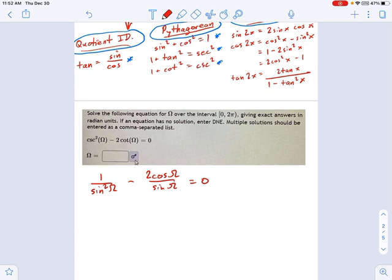That says a bunch of fractions, and maybe let's get rid of the sine squareds on the bottom by multiplying the whole equation by sine squared. So this becomes one minus, okay, that crosses out, and then one of the sines crosses out, but we have a sine left over. So this becomes one, two times sine omega, cosine omega equals zero.